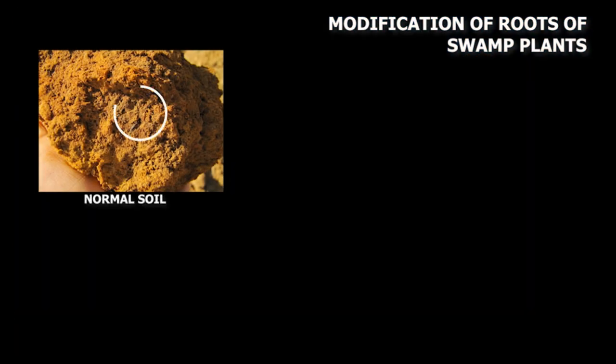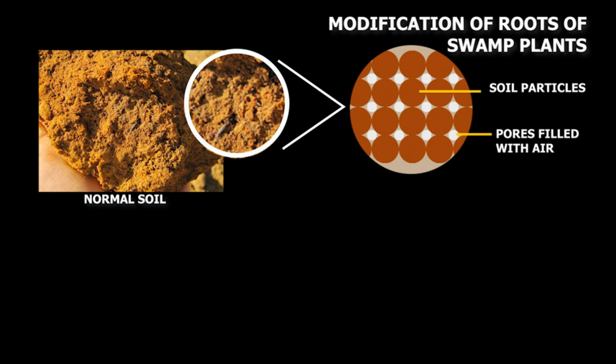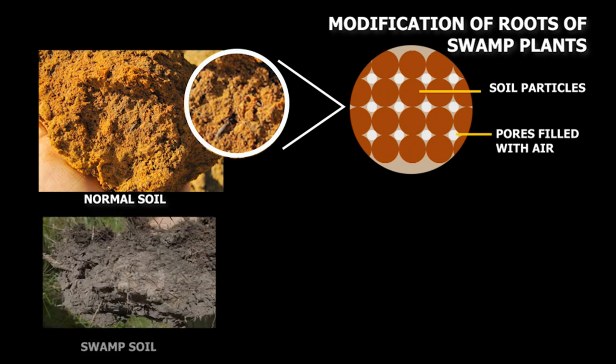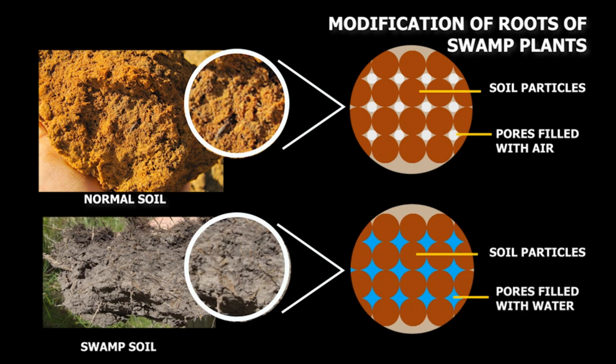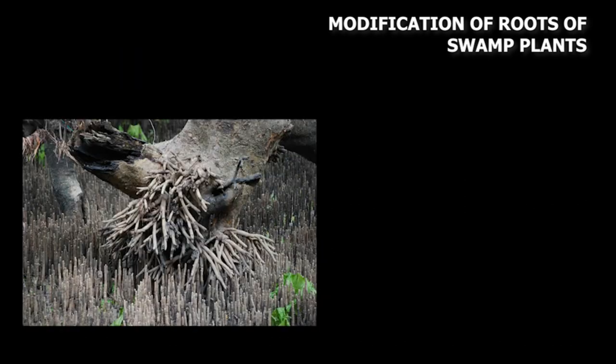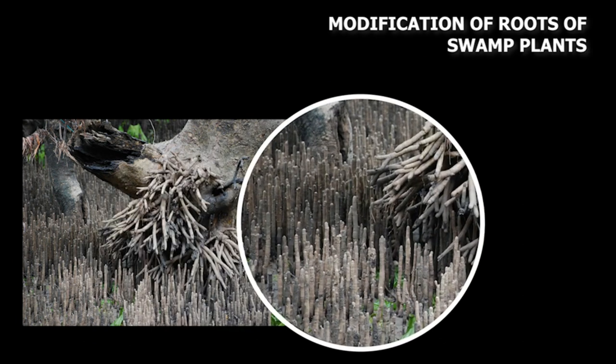In normal soil plants, roots absorb oxygen from air through pores in the soil, but in swamps, these pores get filled with water and respiration stops. To tackle this problem, roots of plants in swamps get modified. They have roots grown above the ground with lots of pores, so roots can absorb as much oxygen as possible.